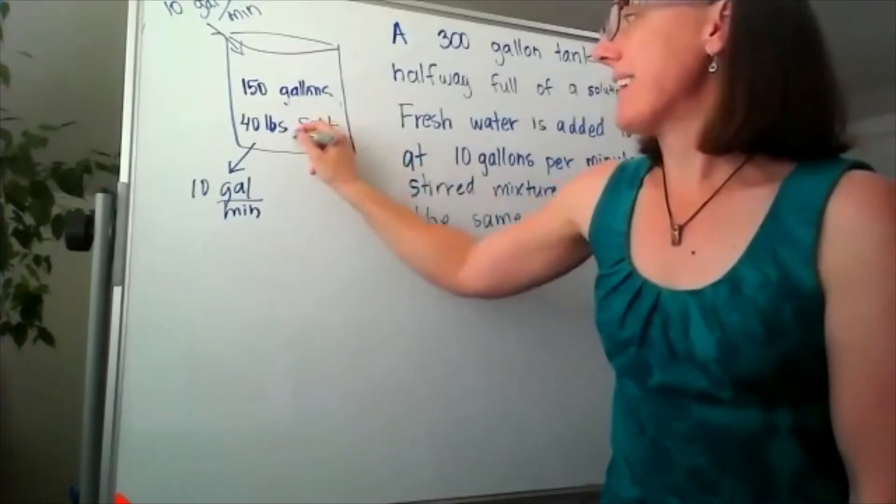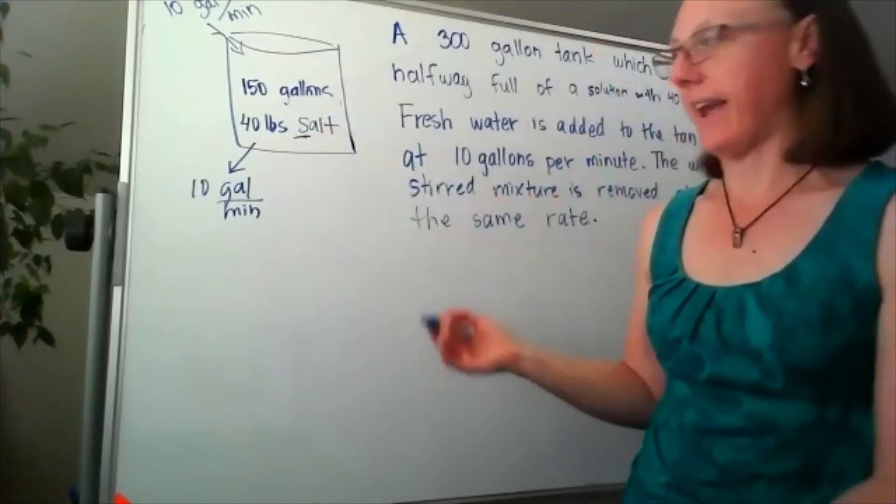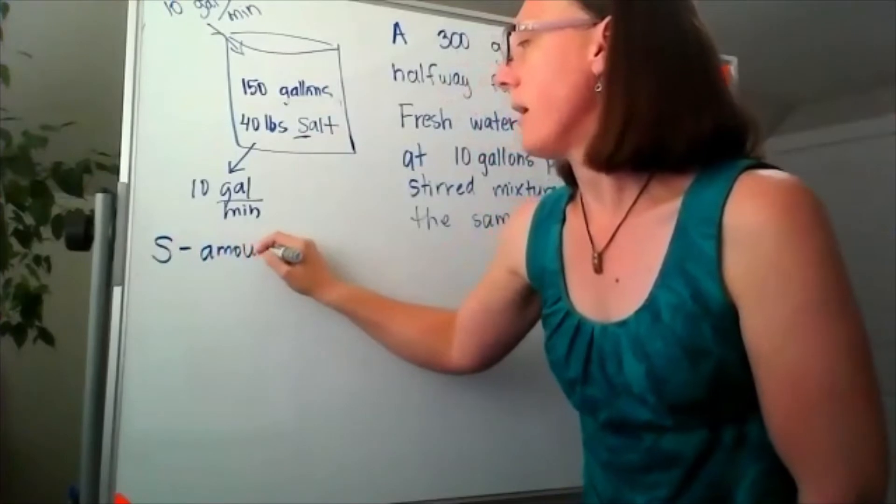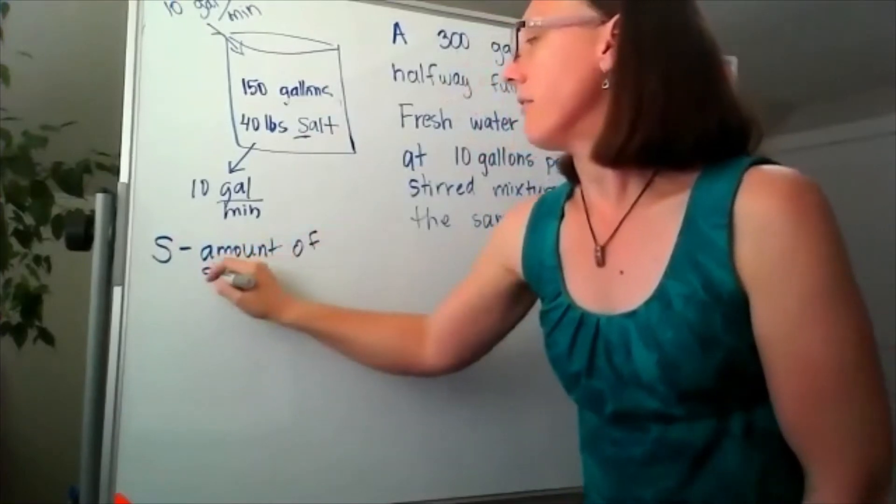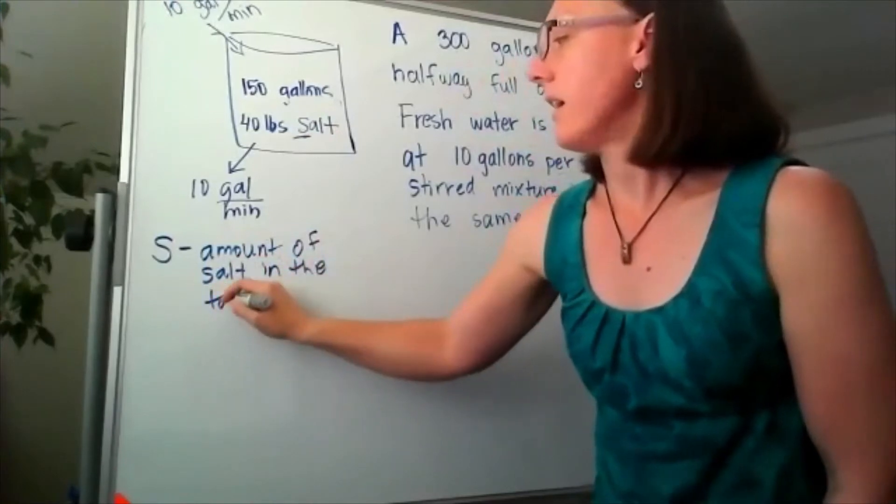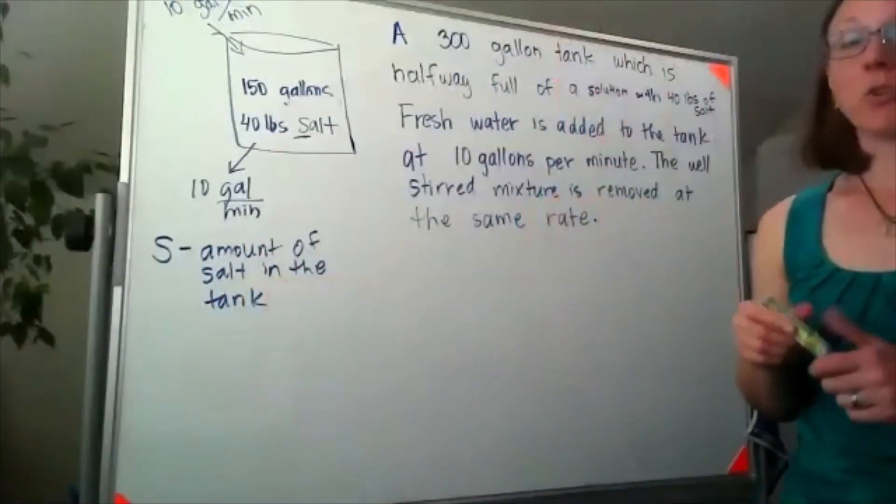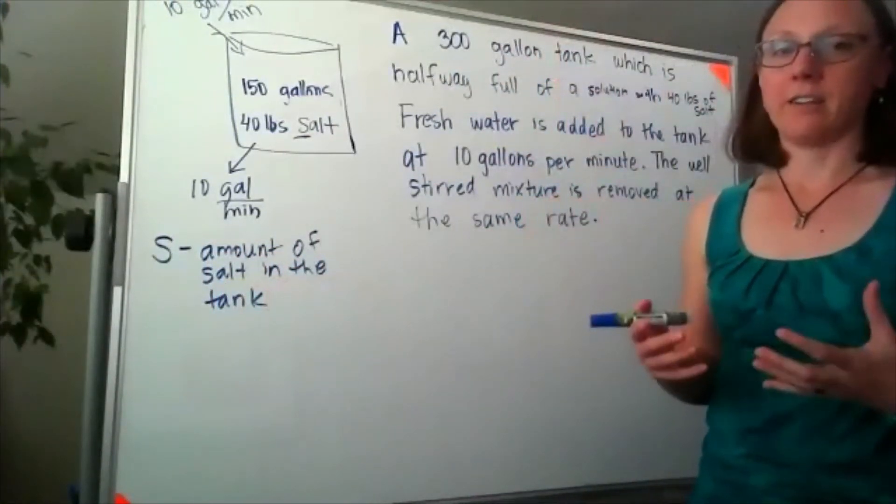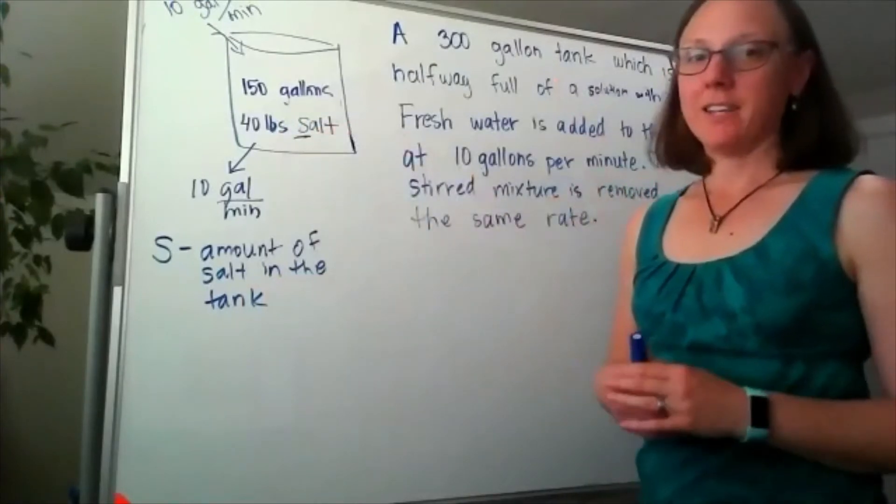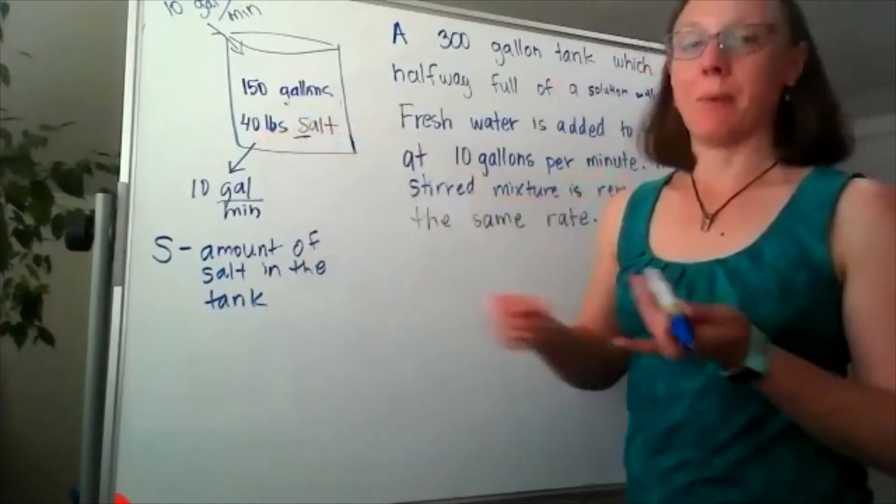I'm going to use S to be the amount of salt in my tank at any time. So S is the amount of salt in the tank. Because I think units are really important in understanding these problems, I wanted to make sure that my units of salt were clear. Here, my units of salt are going to be pounds.